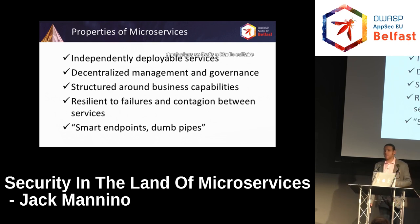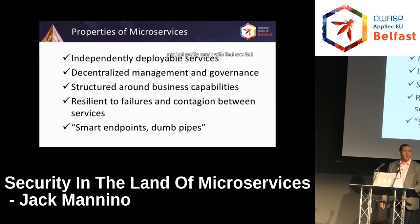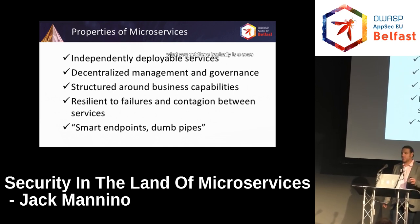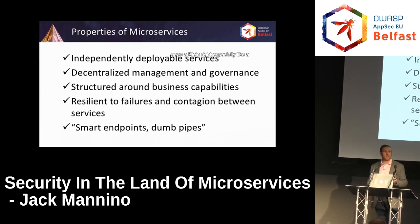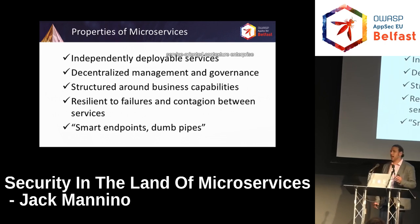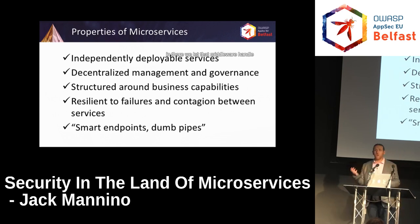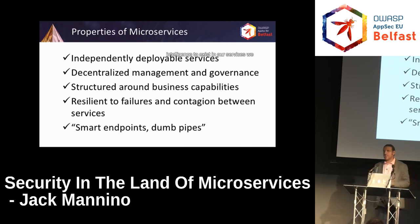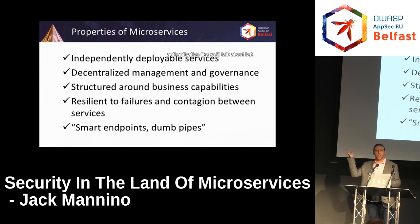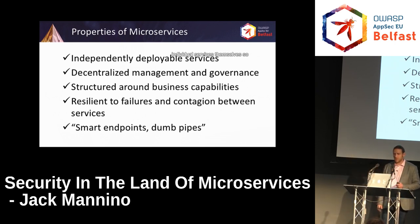Smart endpoints and dumb pipes — that's a Martin Fowler term. In a service-oriented architecture with an enterprise service bus, we used middleware heavily and put business rules and logic in there, letting that middleware handle routing and things like that. In a microservice world, we want that intelligence to exist in our services. We do centralize some things like authentication, but generally we move that logic into the individual services themselves.